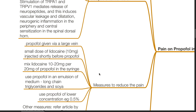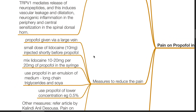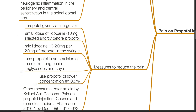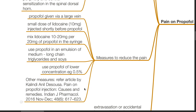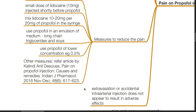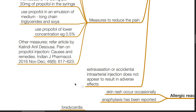Measures to reduce pain on propofol injection include: giving propofol via a large vein; injecting small doses of lidocaine shortly before propofol, such as 10 mg; mixing lidocaine 10 to 20 mg per 20 mg of propofol in a syringe; using propofol in an emulsion of medium to long chain triglycerides and soya; and using a lower concentration such as 0.5%. Further measures are referenced in the article by Kalindi Anil published in 2016. Extravasation or accidental intra-arterial injection does not appear to result in adverse effects.